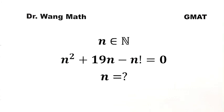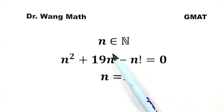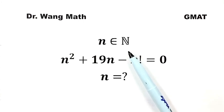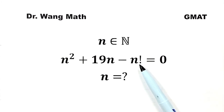In this video, we are going to tackle an interesting GMAT math problem: solve the equation n squared plus 19n minus n factorial equals zero, where n is a natural number. It's important to emphasize that this is not a quadratic equation, as it includes the n factorial, which adds a different dimension to the problem.